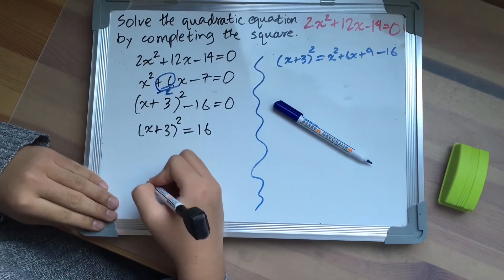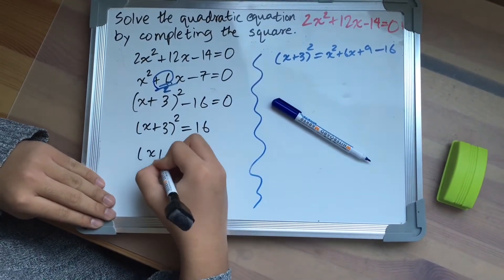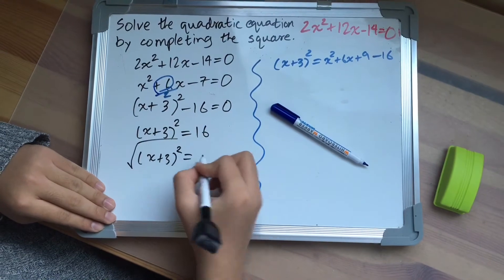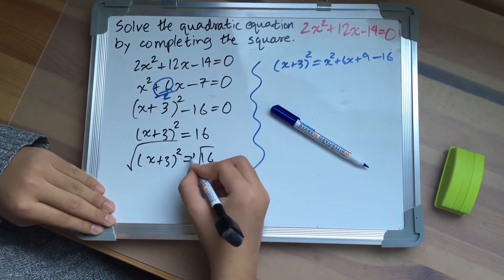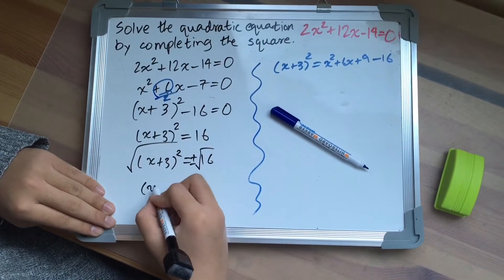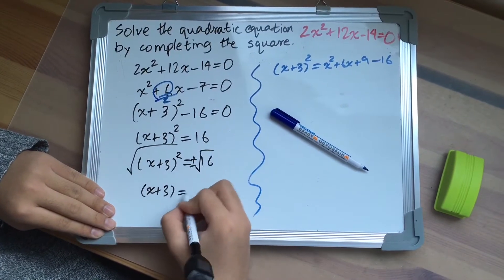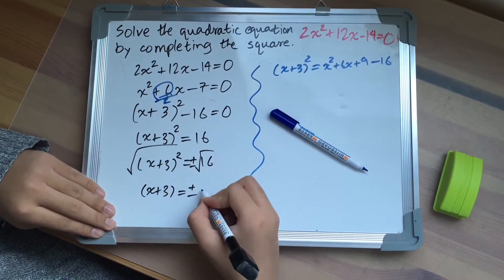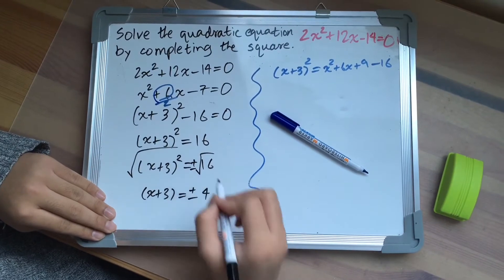Then square root both sides of the equation. And you'll get x plus 3 equals to plus or minus 4, which is the square root of 16.